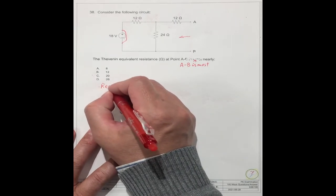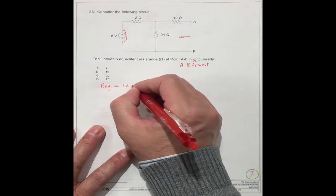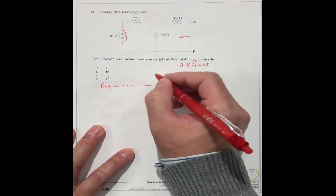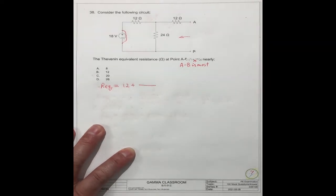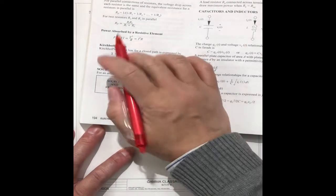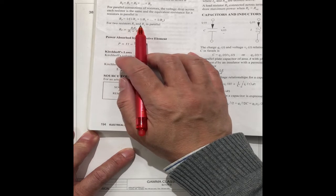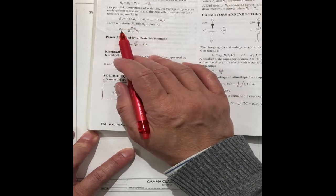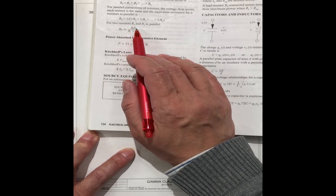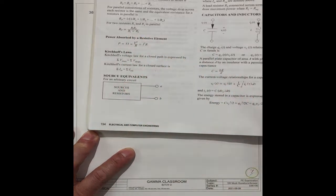R_EQ can equal to 12 plus, use the formula, you can find the formula on page, if you have handbook, page 194. If it is two resistors R1 and R2 in parallel, Rp is equal to R1 times R2 divided by R1 plus R2.